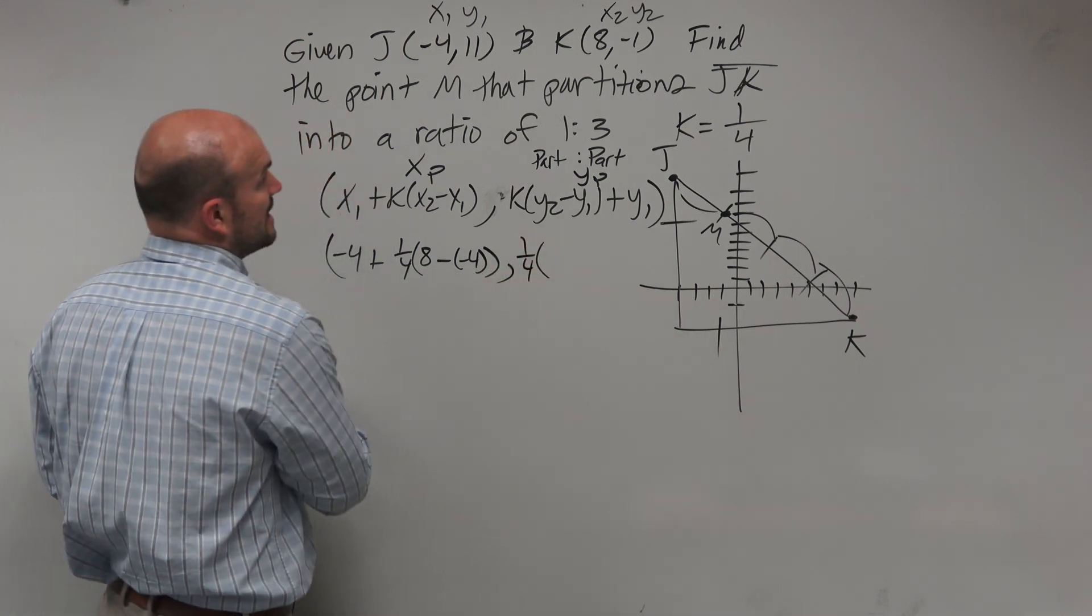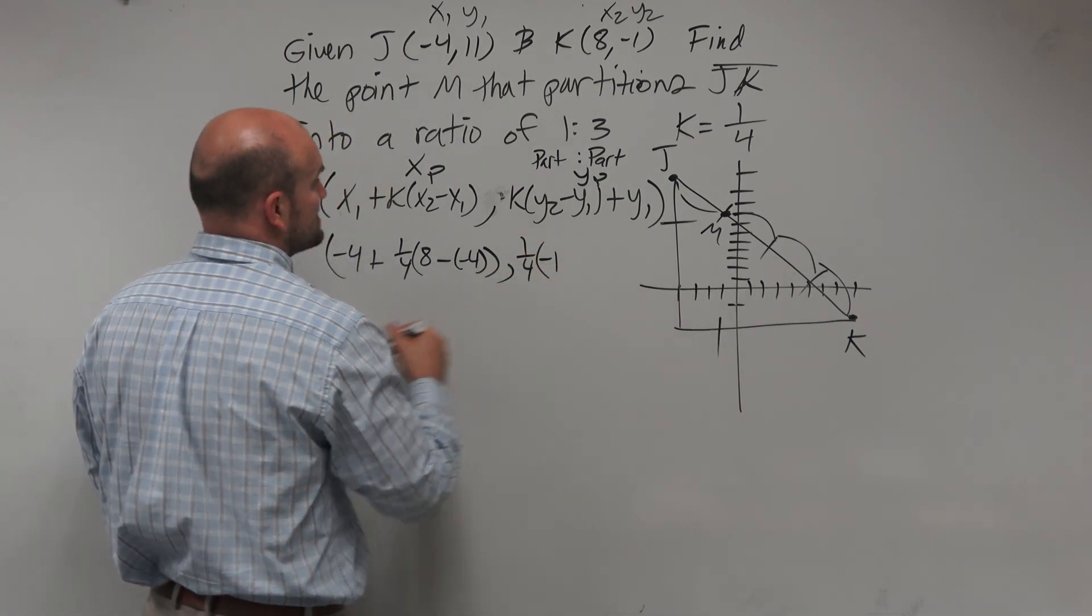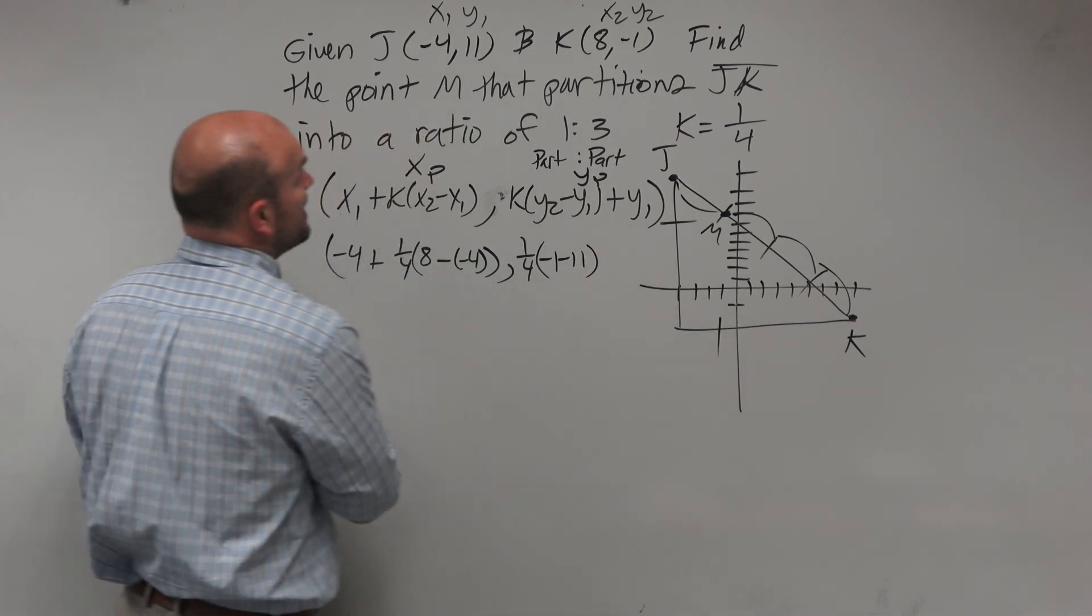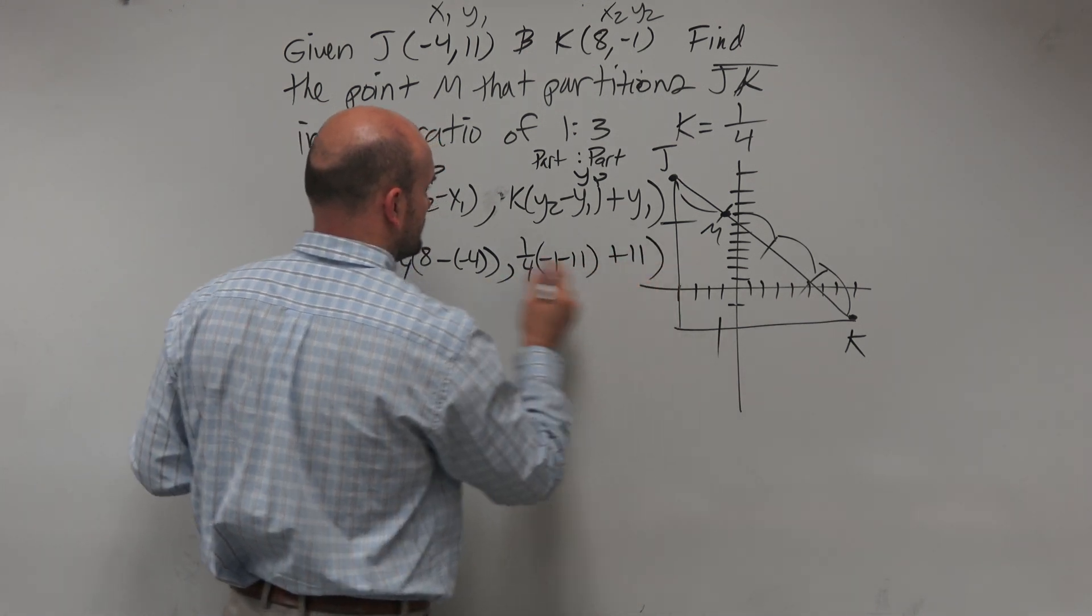Comma, 1 fourth times y2, negative 1, minus 11, and then plus y1, plus 11.